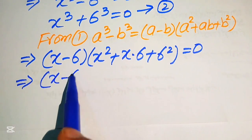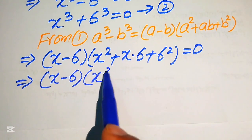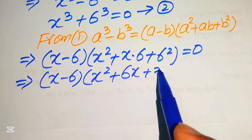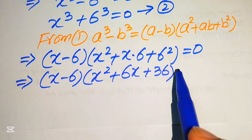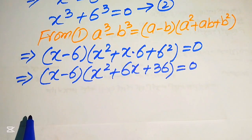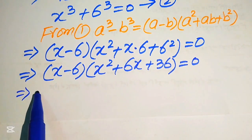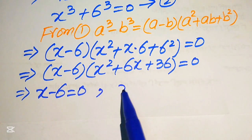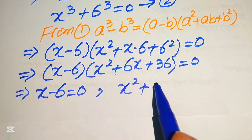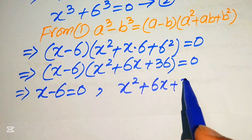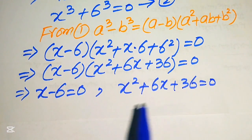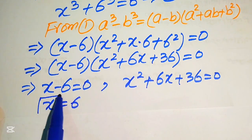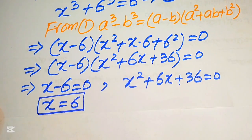We split this into two sub-cases. The first sub-case gives x − 6 = 0, so x = 6. This is the first root of the given equation. The second sub-case gives the quadratic x² + 6x + 36 = 0, which we need to solve to find the remaining roots.